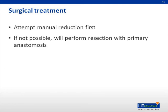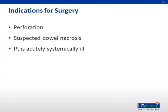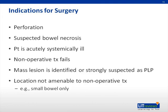Surgical reduction may be necessary for the treatment of intussusception. Surgeons attempt manual reduction first, but if this is unsuccessful, resection of the affected bowel with primary anastomosis may be necessary. Indications for surgical reduction include perforation, suspected necrosis, acute systemic illness, failure of non-operative treatment, or if the suspected lead point is a mass lesion. Surgical reduction is also indicated if the intussusception only involves the small bowel, as this type is not amenable to reduction via enema.